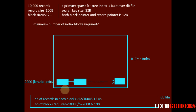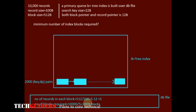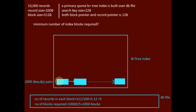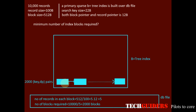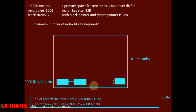Hence the number of key-data pointer pairs in the leaf nodes will be equal to the number of blocks — that is, 2,000. Now if we can find the number of key-data pointers each leaf node can keep, then we will be able to find the total number of leaf nodes at the first level.